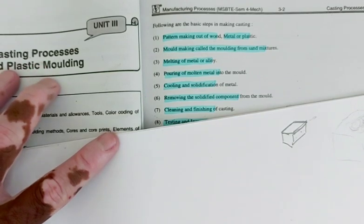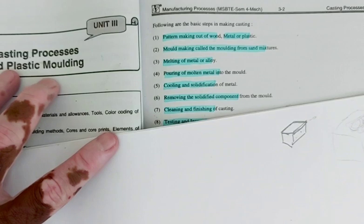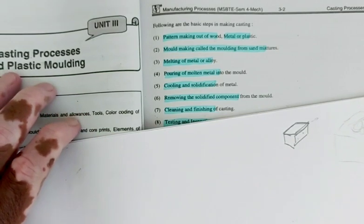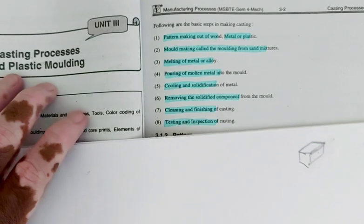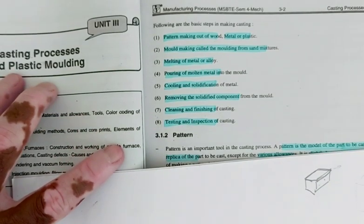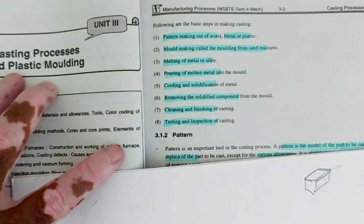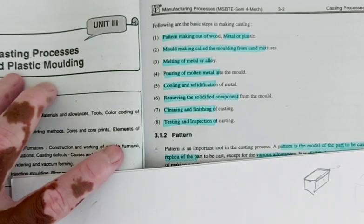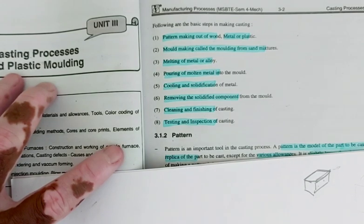Step by step: first step, pattern making of wood, metal, or plastic. Second step, mould making called moulding from sand mixture. Third, melting of metal or alloy. Fourth, pouring of molten metal into the mould. Fifth, cooling and solidification of metal. Sixth, removing the solidified components from the mould. Seventh, cleaning and finishing of casting. Eighth, testing and inspection of casting. These are the eight steps to be followed in the casting process.